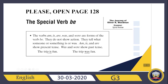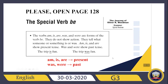Let's check: The trip is fun. The trip was fun. What is the difference? I use am, is, are for present tense by checking the subject. I use was, were in past tense by checking the subject again. Don't forget: am, is, are for present tense; was, were for past tense.